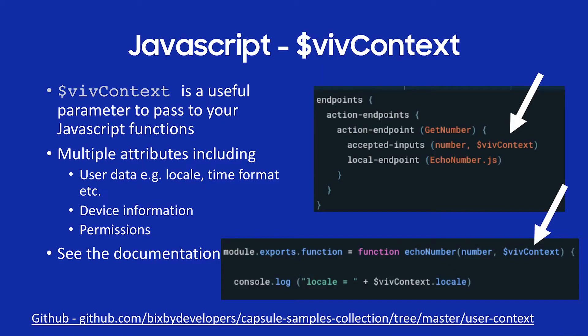Let's talk about viv context. This is a really useful variable you can pass into your JavaScript functions. From viv context you can get user data like locale, time format, device information, permissions, etc. In this endpoint getNumber example, I'm passing a number and viv context to echoNumber.js. In that JavaScript function, I'm passing in viv context and logging the user locale. There's example code on GitHub for how to use viv context.